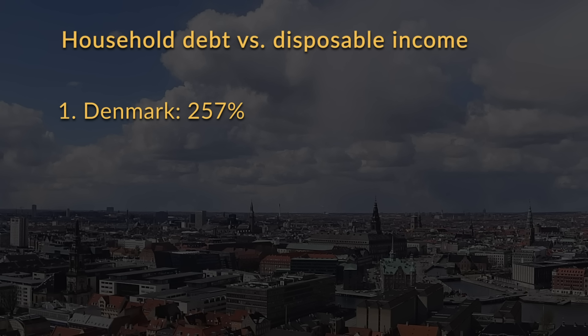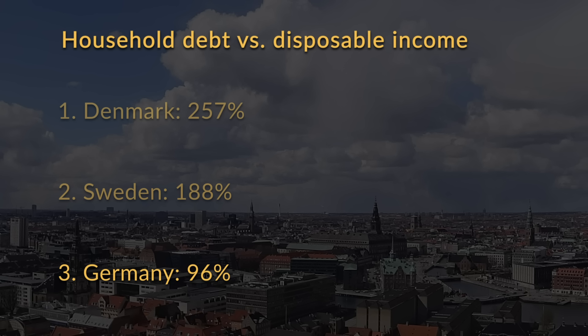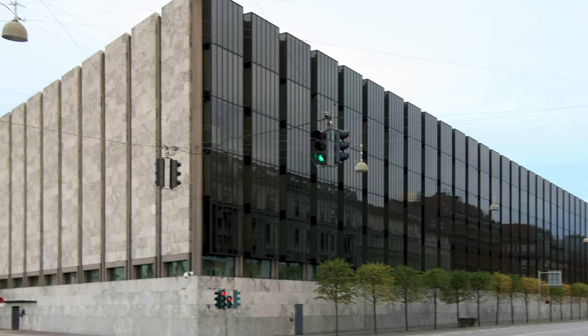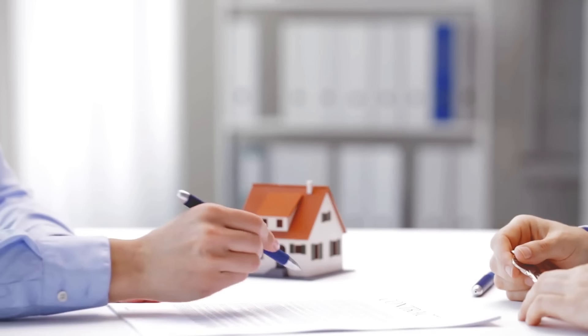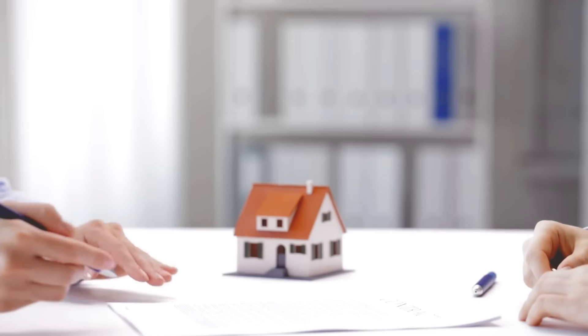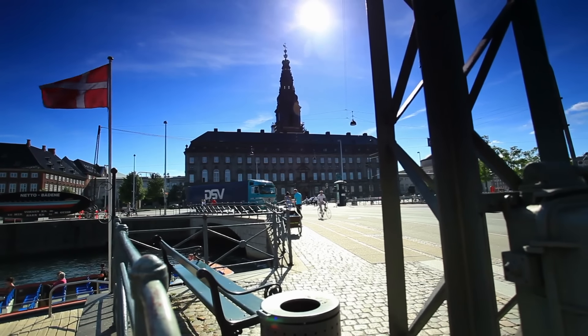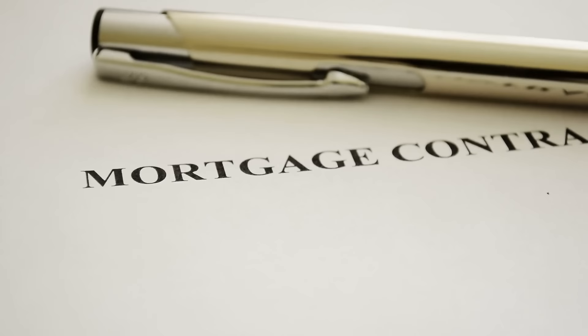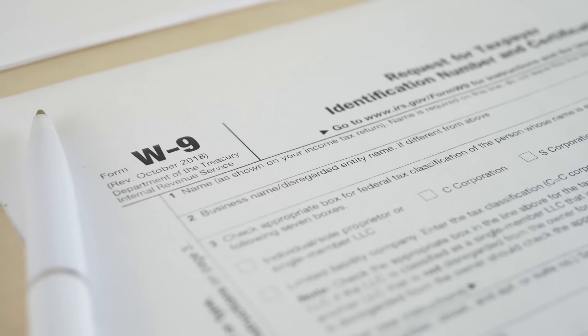For comparison, household debt is 188% in Sweden and only 96% in big neighbour Germany. As you might imagine, this is a major headache for the Danish central bank. But it is not just the central bank's fault for keeping interest rates at rock bottom — a major part of why Danish mortgages and house prices are so high is because politicians have been actively encouraging this, and have even made mortgage interest payments tax-deductible.